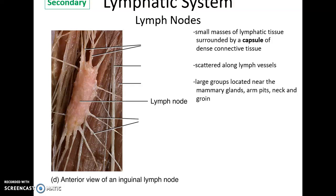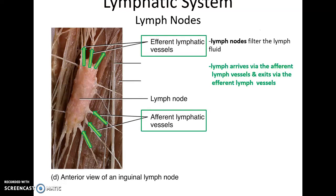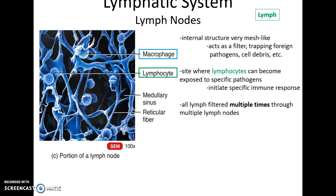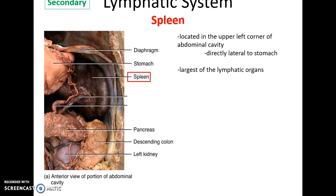Lymph nodes have afferent lymphatic vessels bringing lymph into them and efferent vessels exiting with slightly filtered lymph. The lymph nodes filter the lymph fluid of cell debris and also screen for pathogens. Within the lymph node is a mesh-like structure made of reticular fibers with embedded immune cells — macrophages and lymphocytes — which respond to any pathogens found in the passing lymph. Lymph fluid gets filtered by multiple lymph nodes as it travels through the lymph vessel.